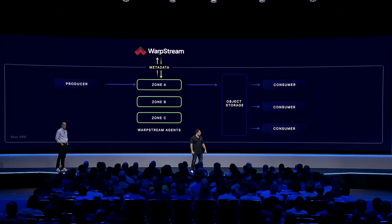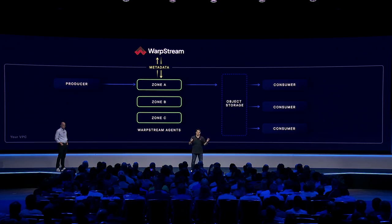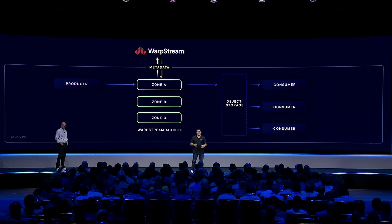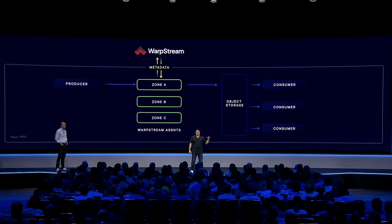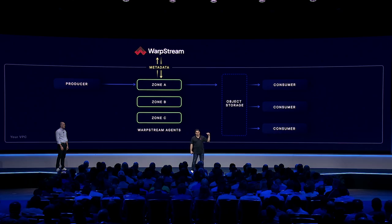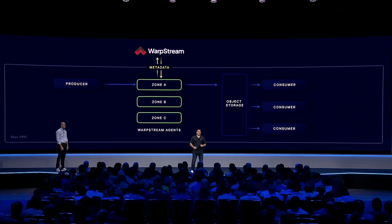That's what we built with WarpStream. WarpStream has what we like to call a zero-disk architecture. You can look at the entire WarpStream stack and there are no local disks, no write caching, no EBS volumes — nothing. What we do instead is use commodity object storage as the primary and only storage in the system. That increases the latency of the system a little bit, but in exchange we get a dramatically simpler architecture that is much, much easier to operate.